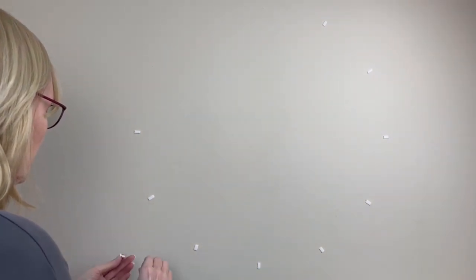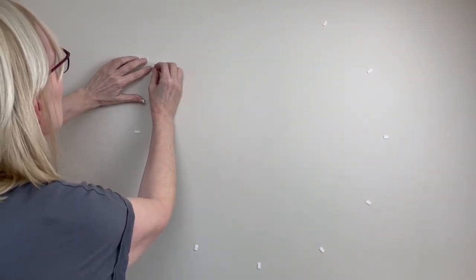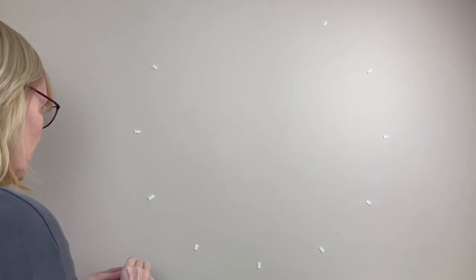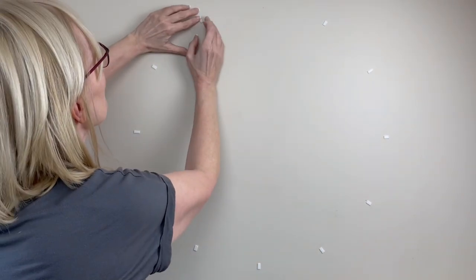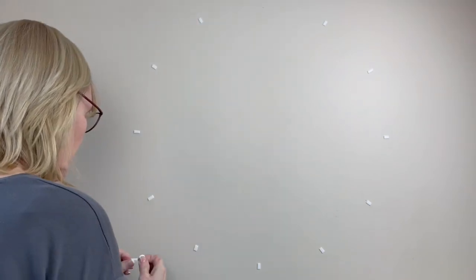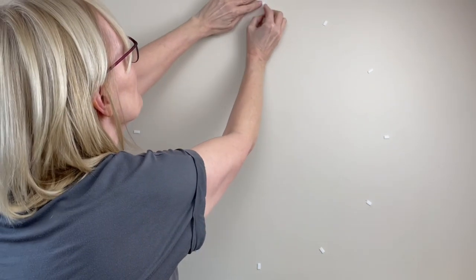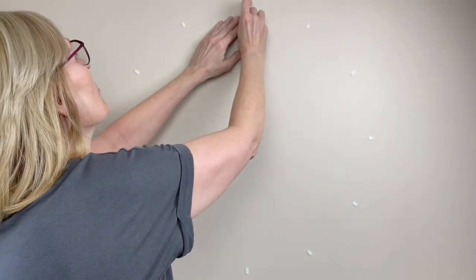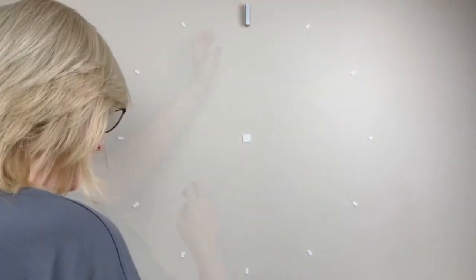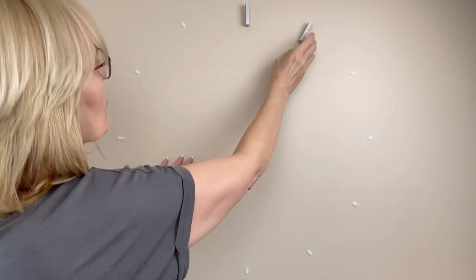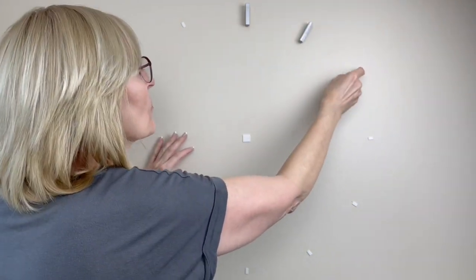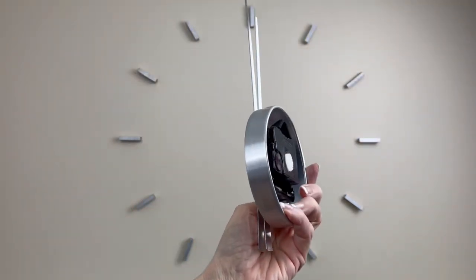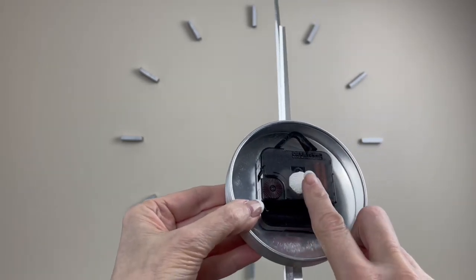These things are so hard to peel off with fake nails. Finally sticking on the blocks. Forgot to show you putting velcro on the back of the clock and sticking the clock on the wall.